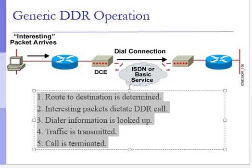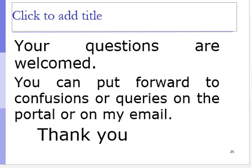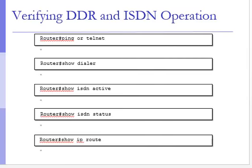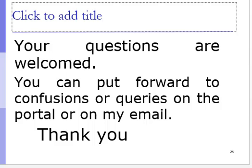In the U.S. and Japan, DDR speed is basically 1.5 Mbps, while in Europe and Australia it is around 2.048 Mbps — this was also discussed in the previous class. This concludes the first part of lecture number 14, in which we introduced the concept of DDR, its basics, terminologies, and the generic operation of how DDR actually works.